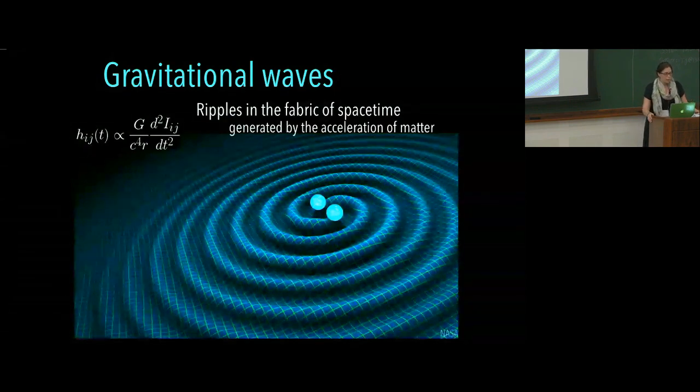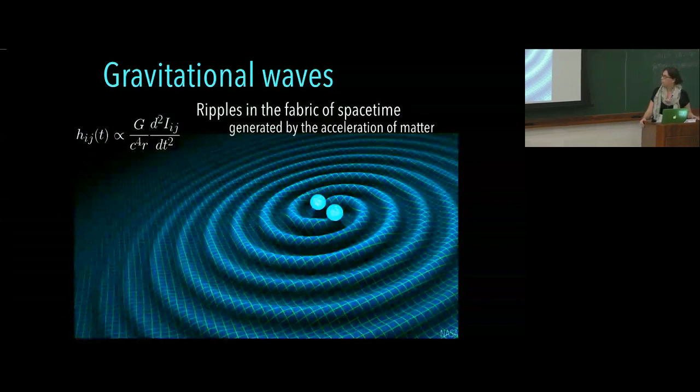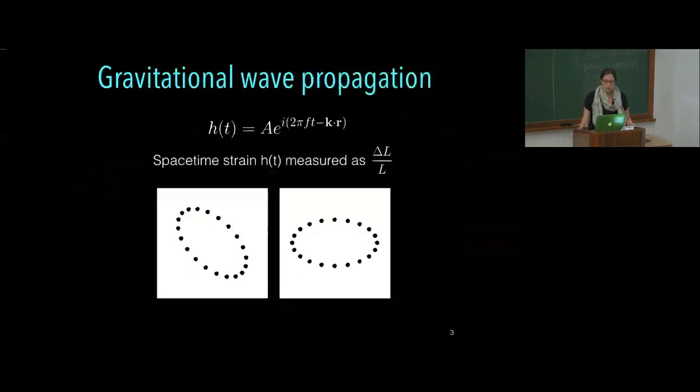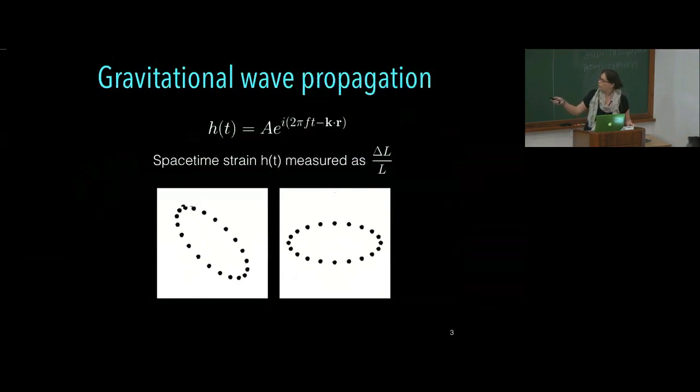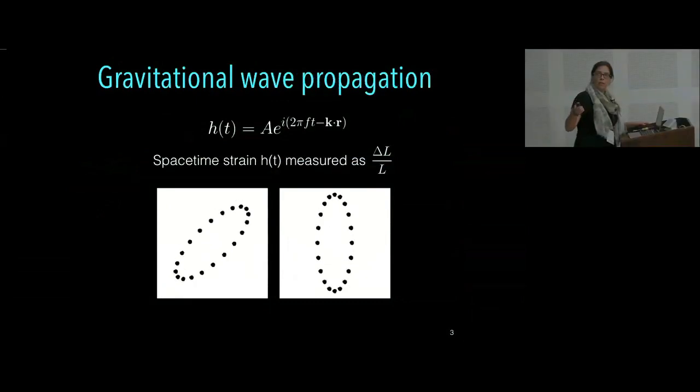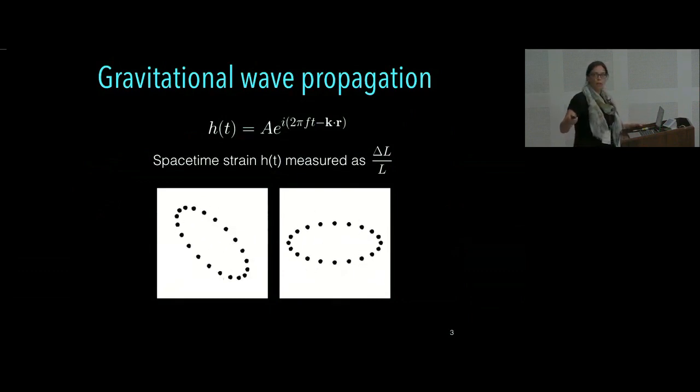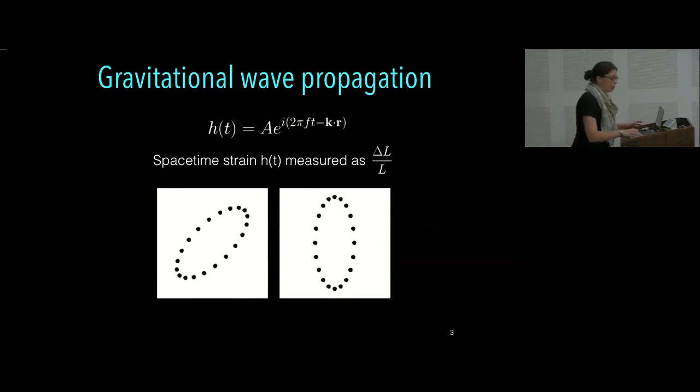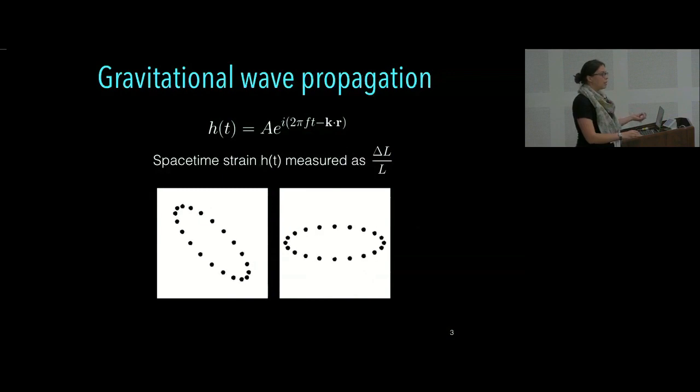So our space-time strain, h(t), it's proportional to the second derivative of the quadrupole moment of the system in question. And this makes gravitational waves that propagate as waves at the speed of light. And they induce this space-time strain, so this change in length over length. And there are two different polarizations of gravitational waves. One is called cross and the other is called plus. And it's this polarization that motivates sampling more than one degree of freedom in space. And then this motivates the shape of our detectors.